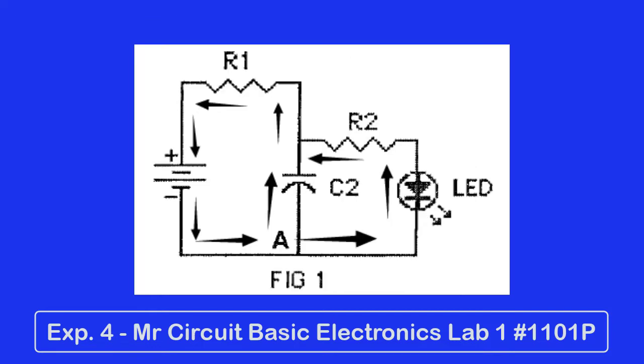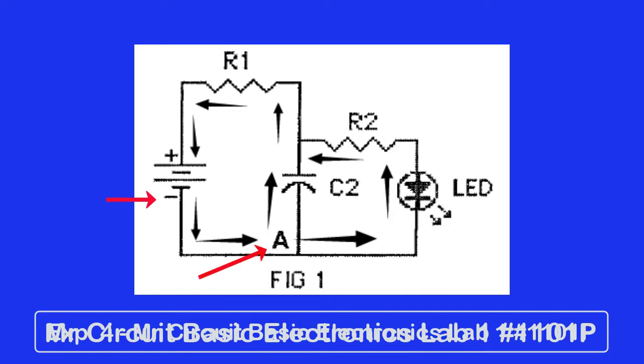Let's look at the schematic diagram of the circuit that you're going to build on the solderless circuit board. Let's look at figure one. Notice carefully, the current goes from the negative terminal of the battery to point A, where it divides.